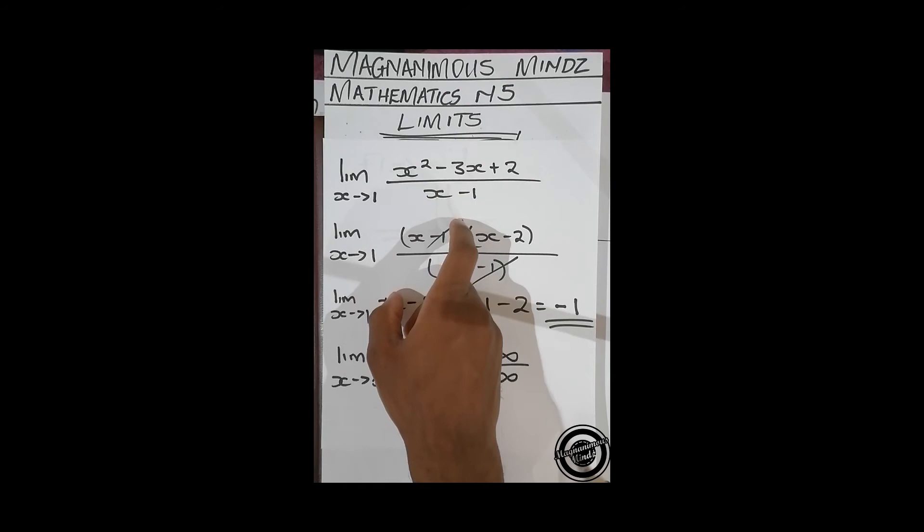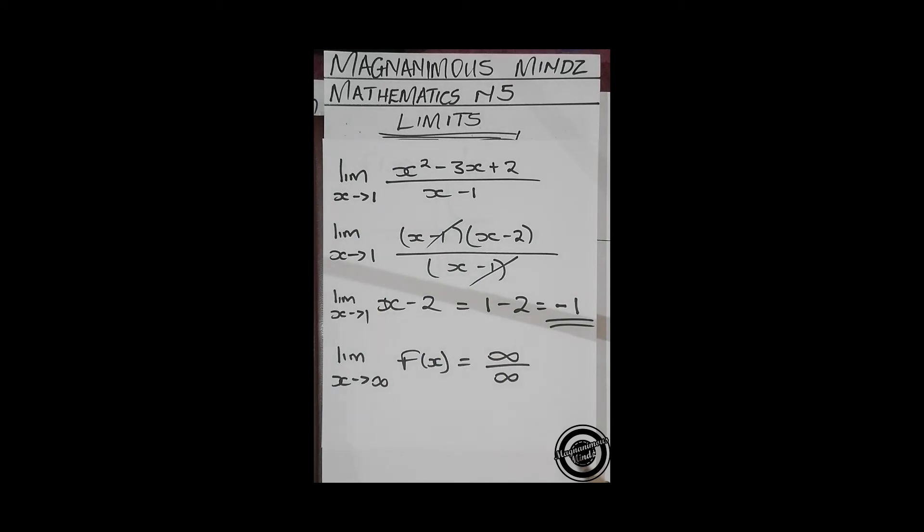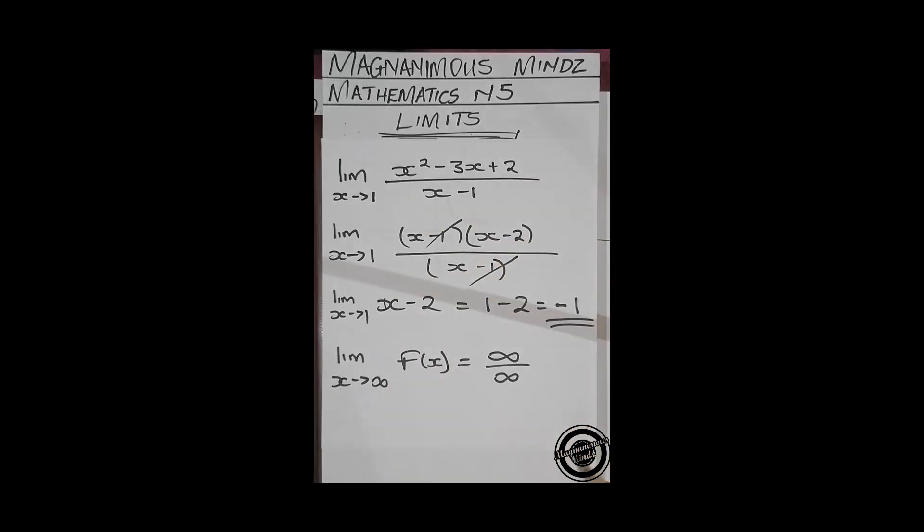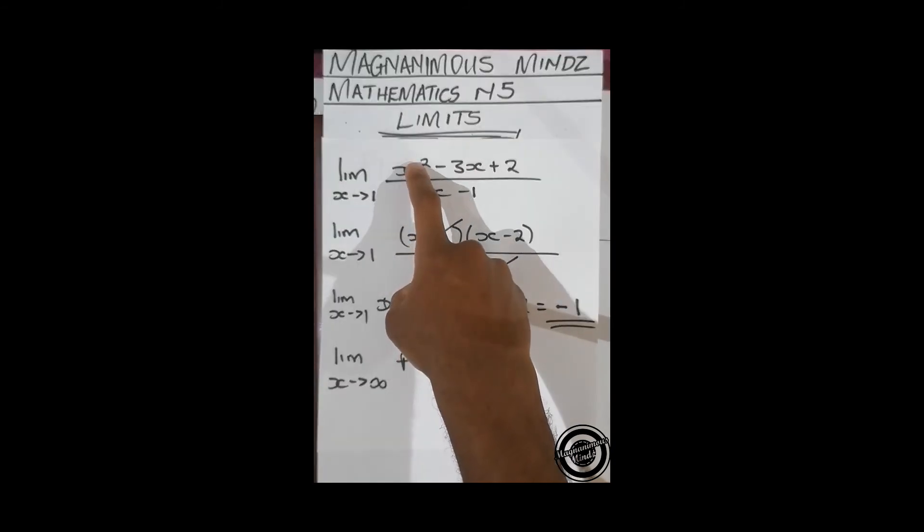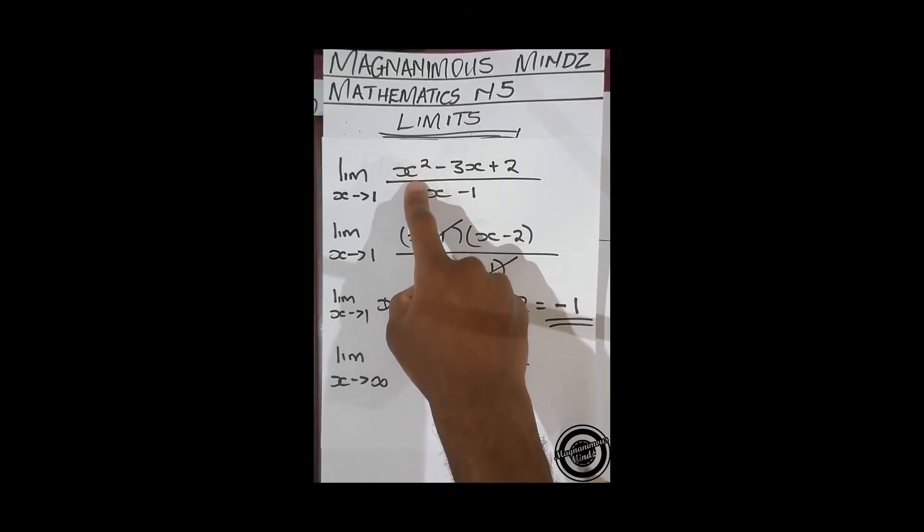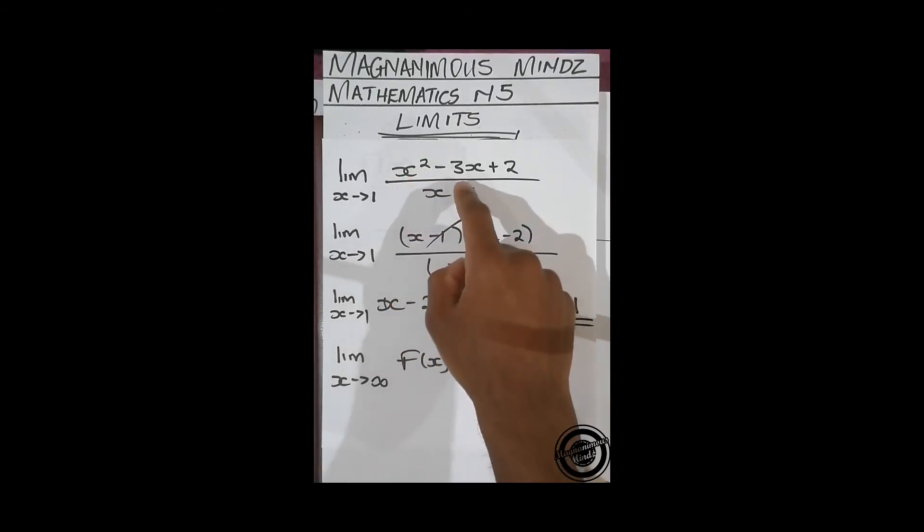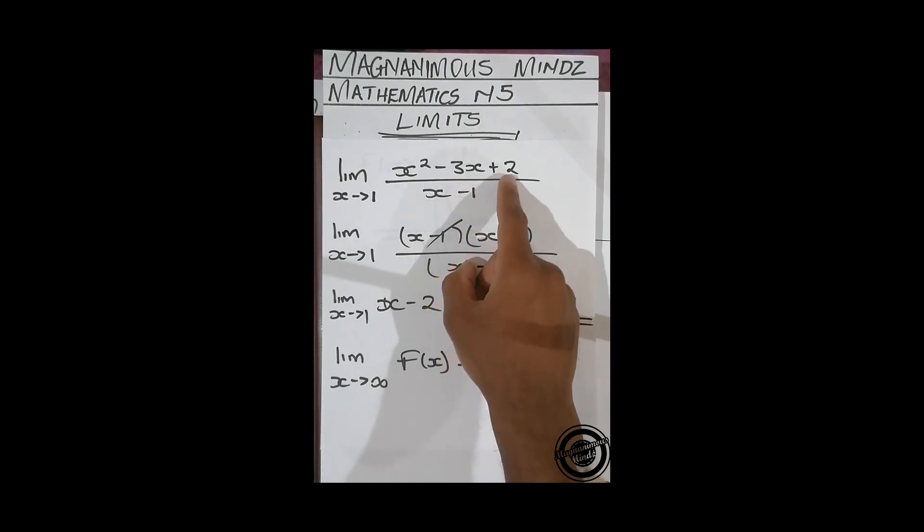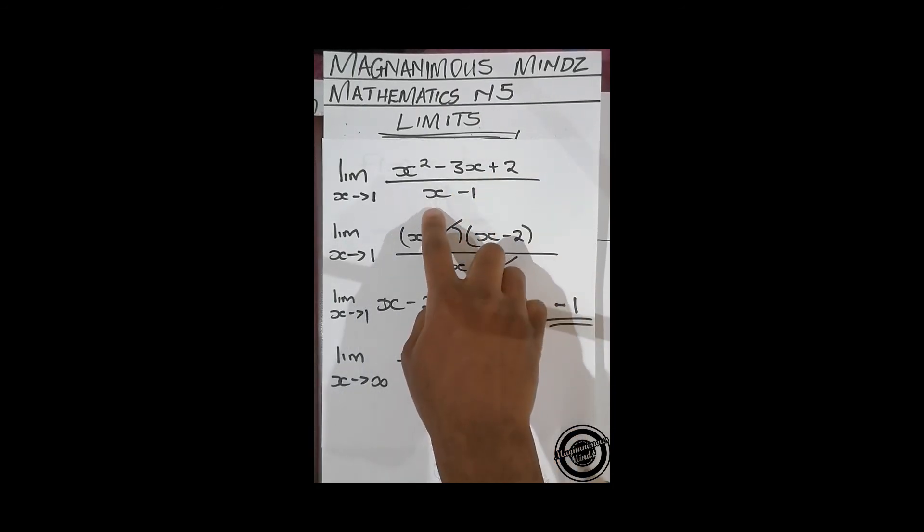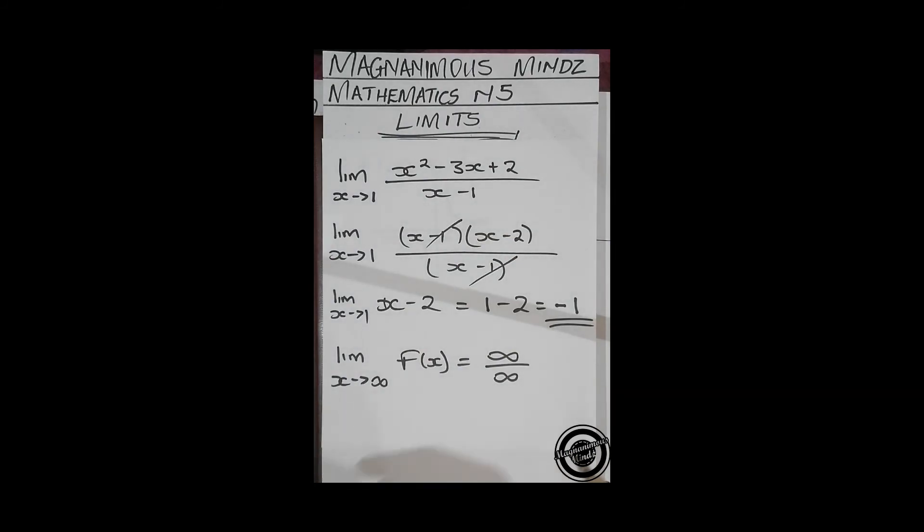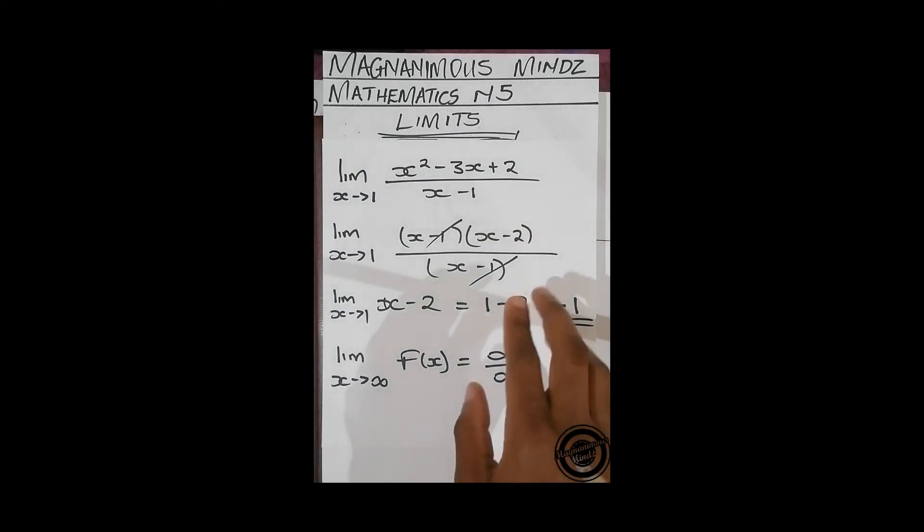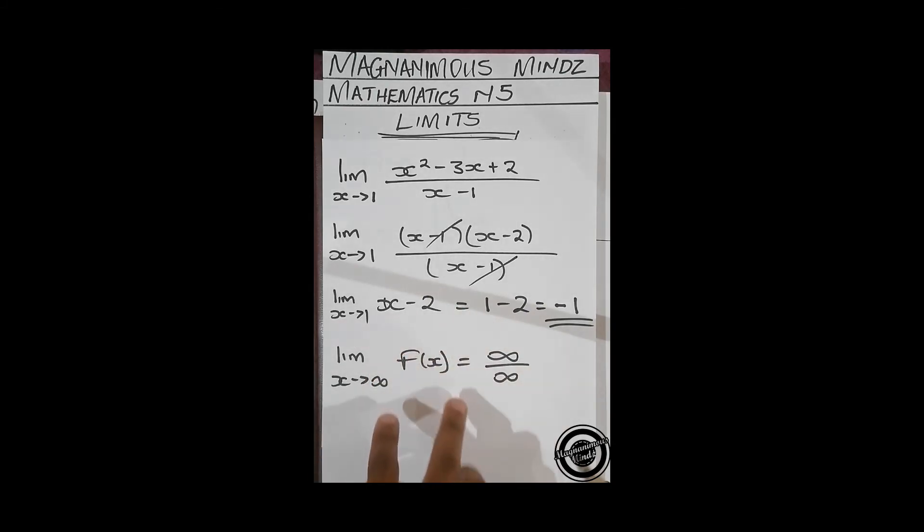In this case we use a different method whereby we divide everything by x to the power n, where n is the highest degree that's applicable to the numerator and the denominator. In this case it's x, so we're going to divide everything by x. You are going to be left with x, then you'll be left with -3, here 2/x, and then here 1 - 1/x. Then we directly substitute and the answer is going to be infinity.